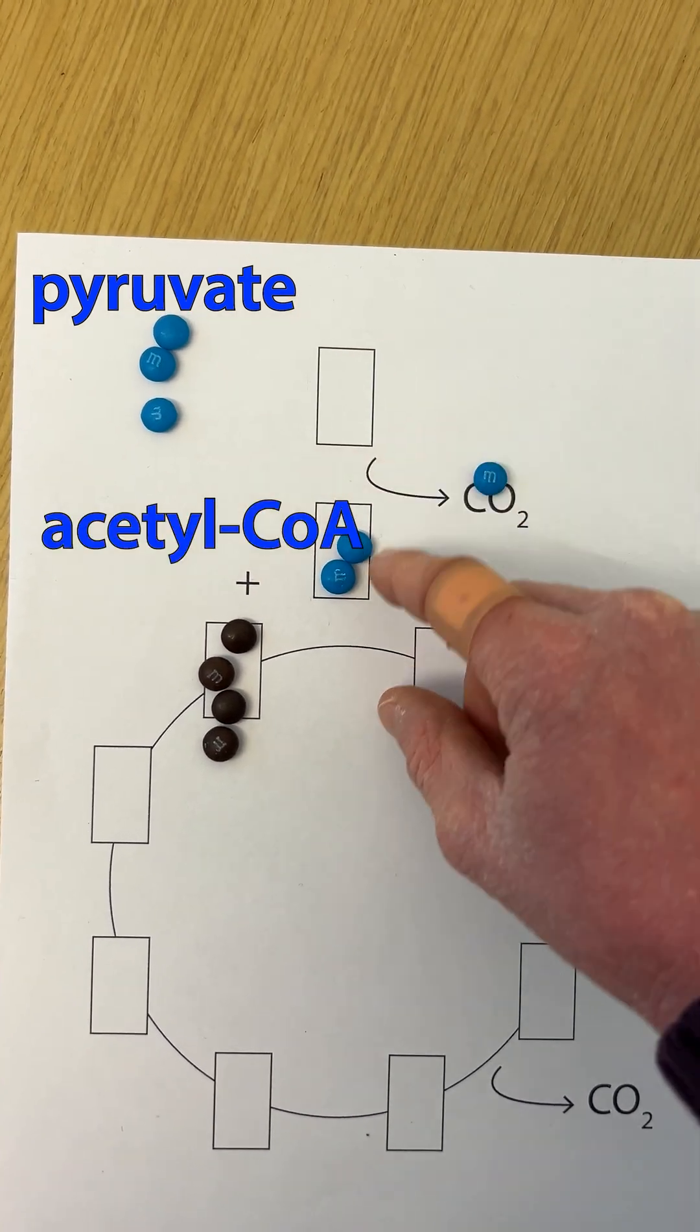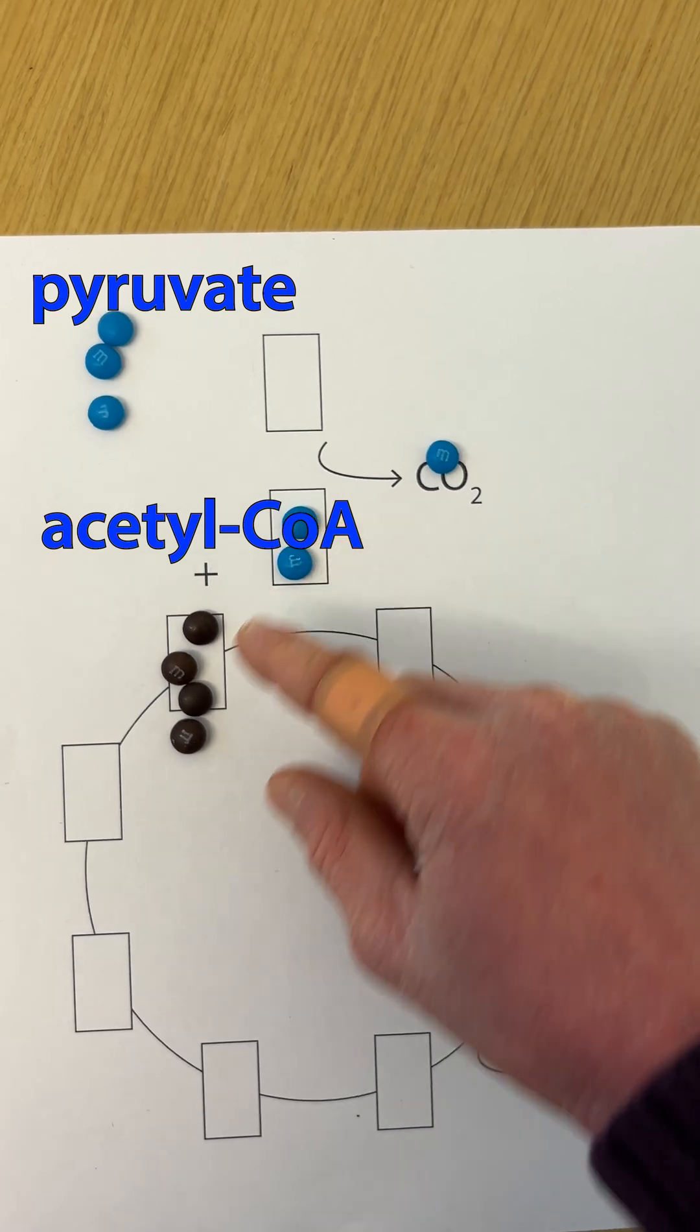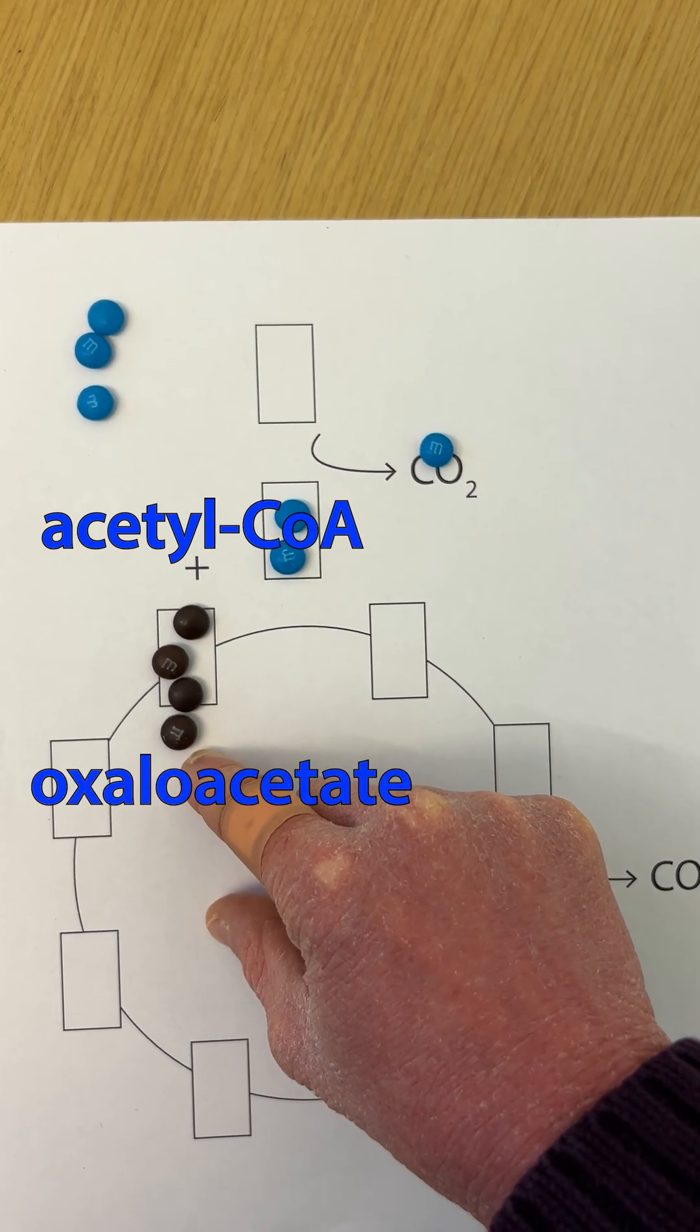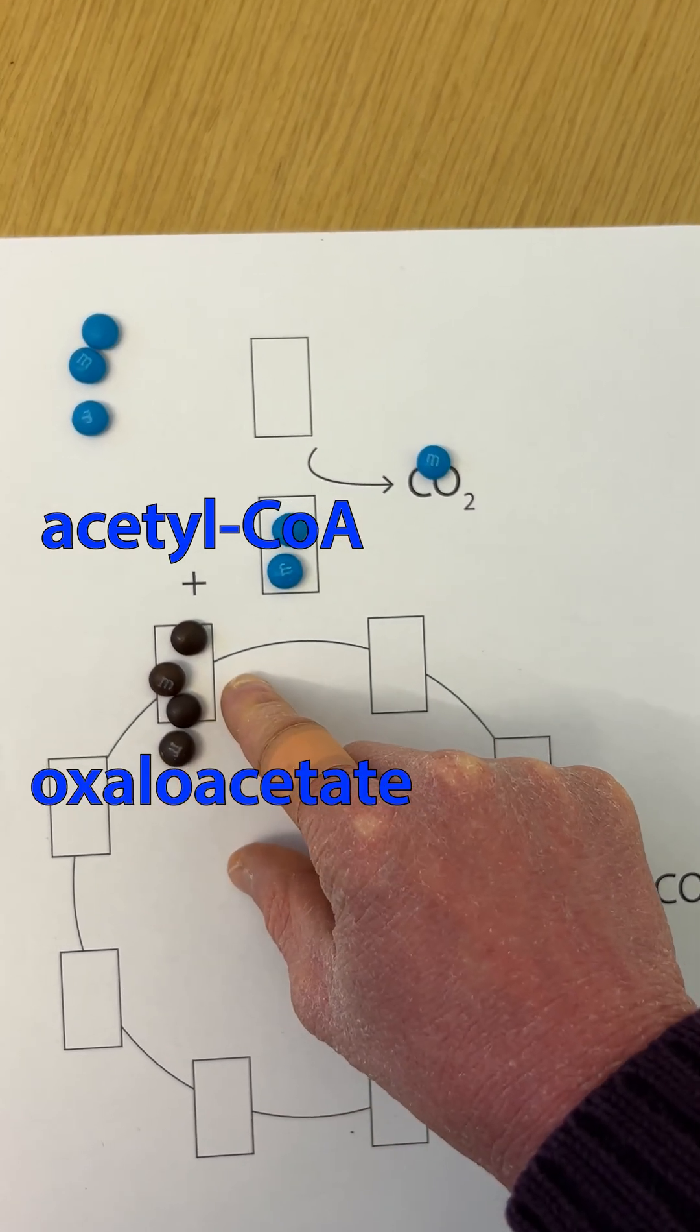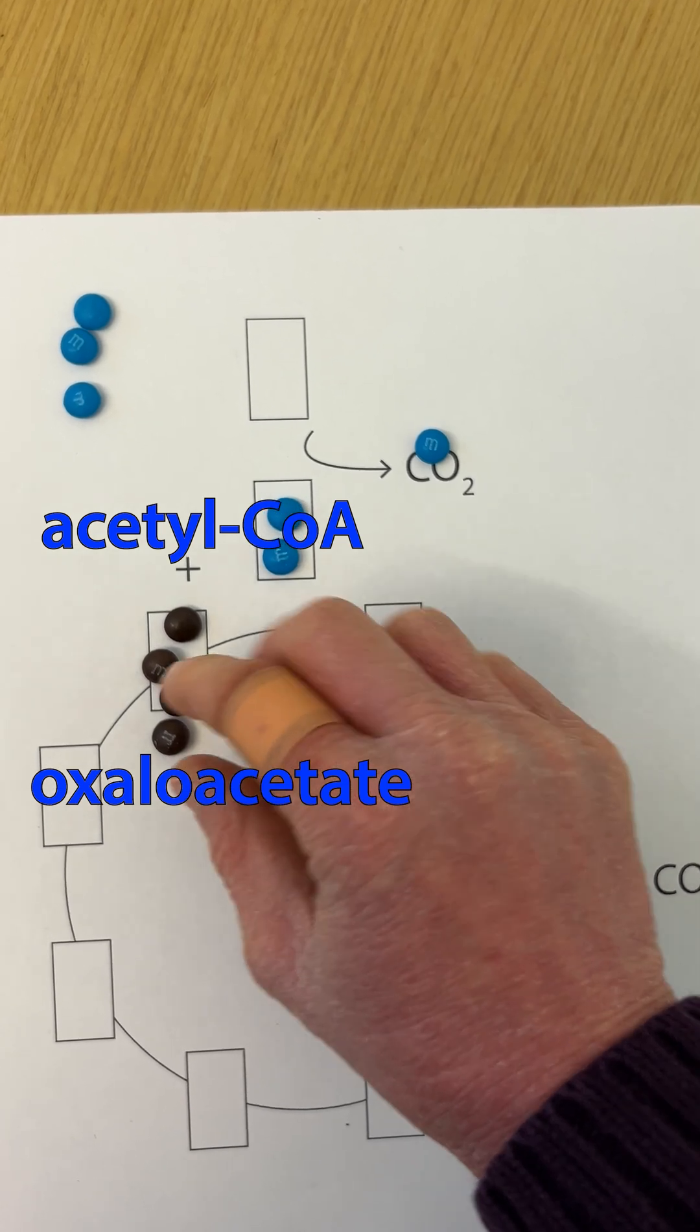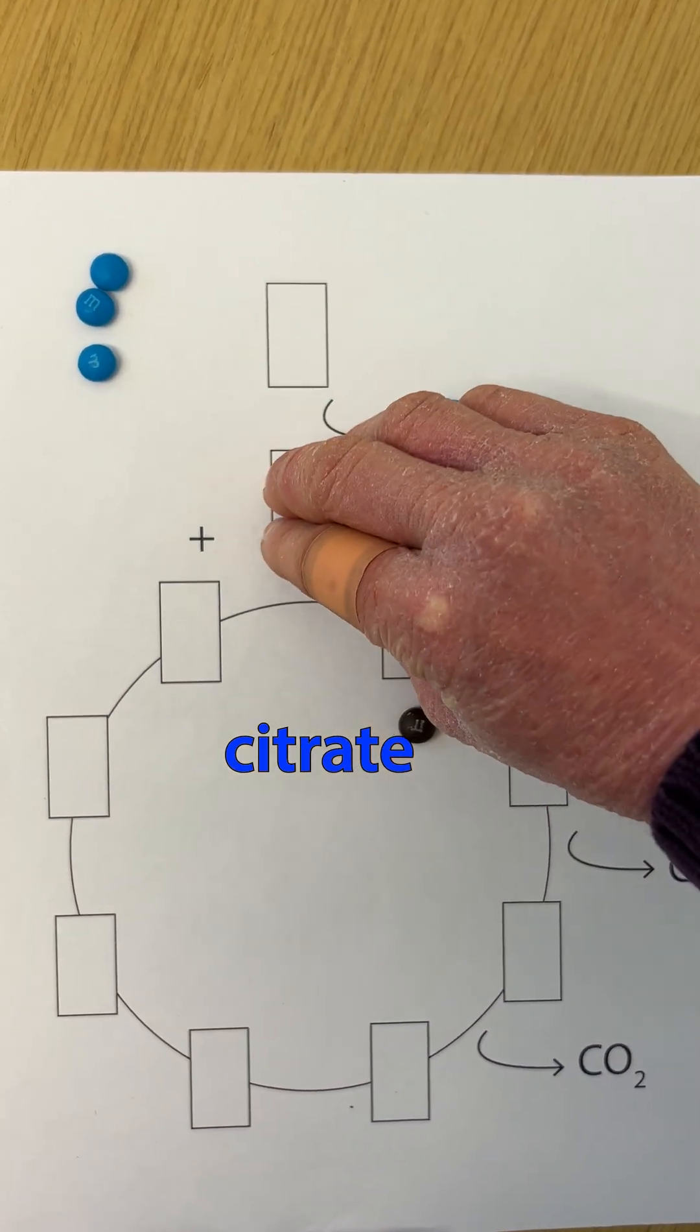That takes us from pyruvate to acetyl-CoA. Now we've got two carbons, and we've got four carbons—these four carbons are oxaloacetate. We're going to combine them to make citrate.